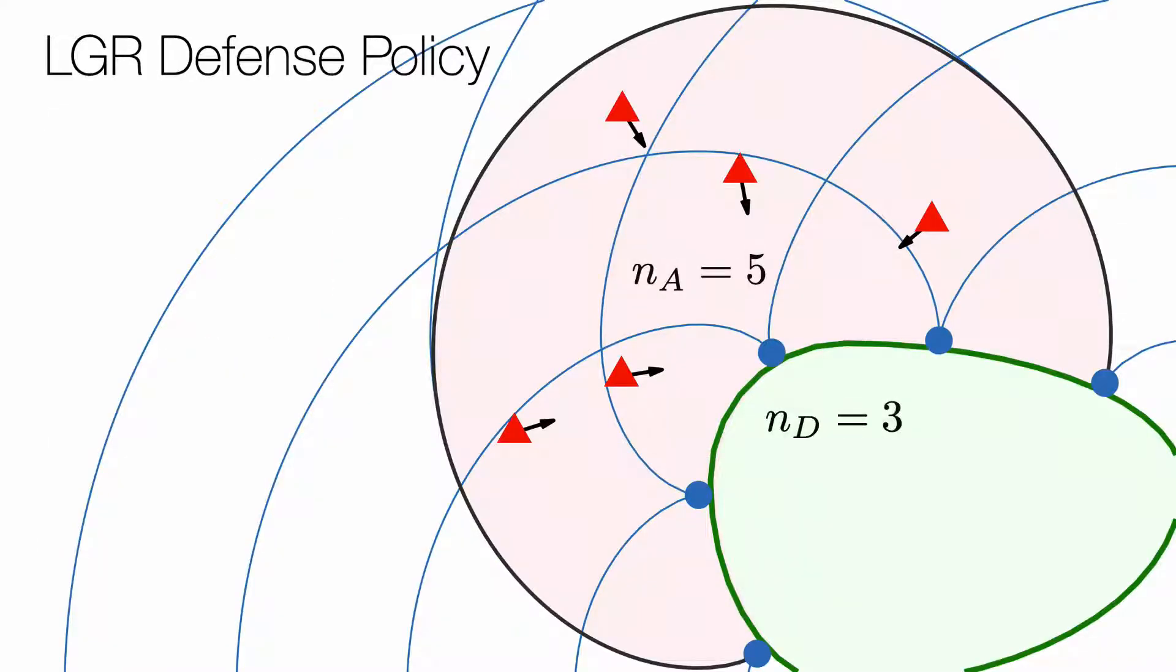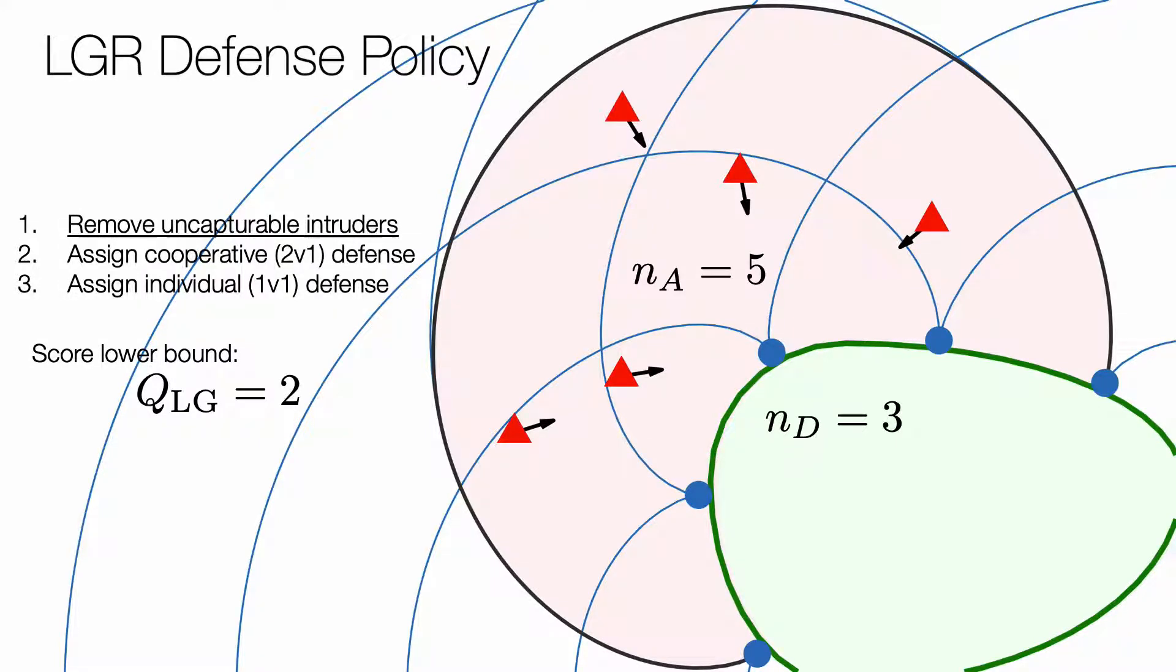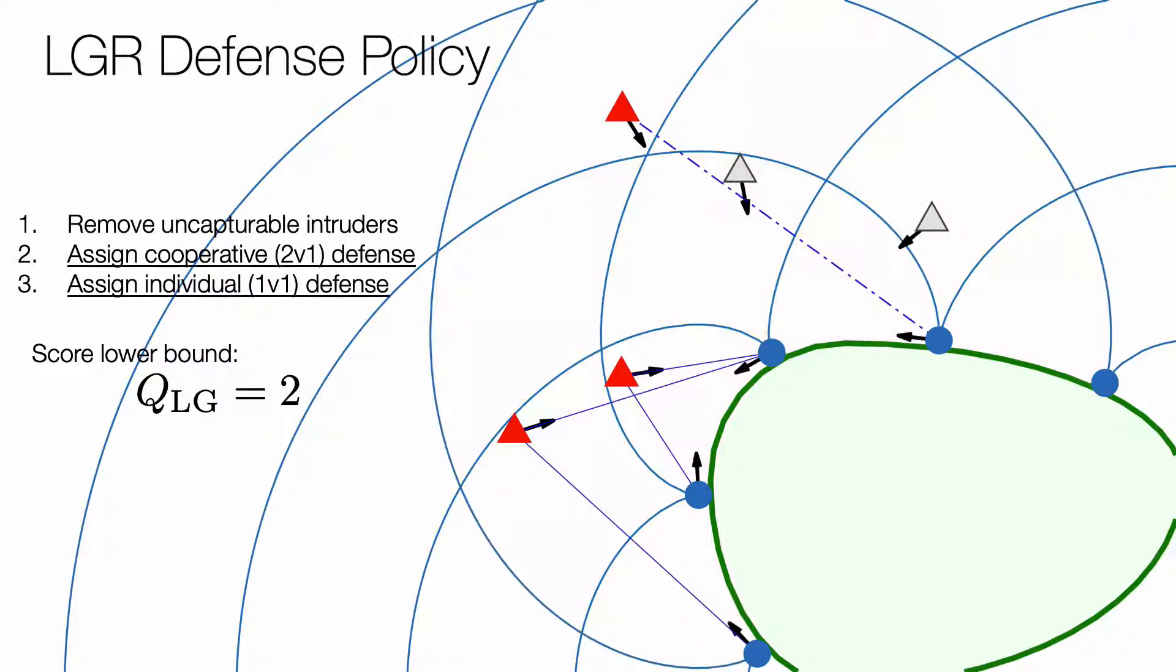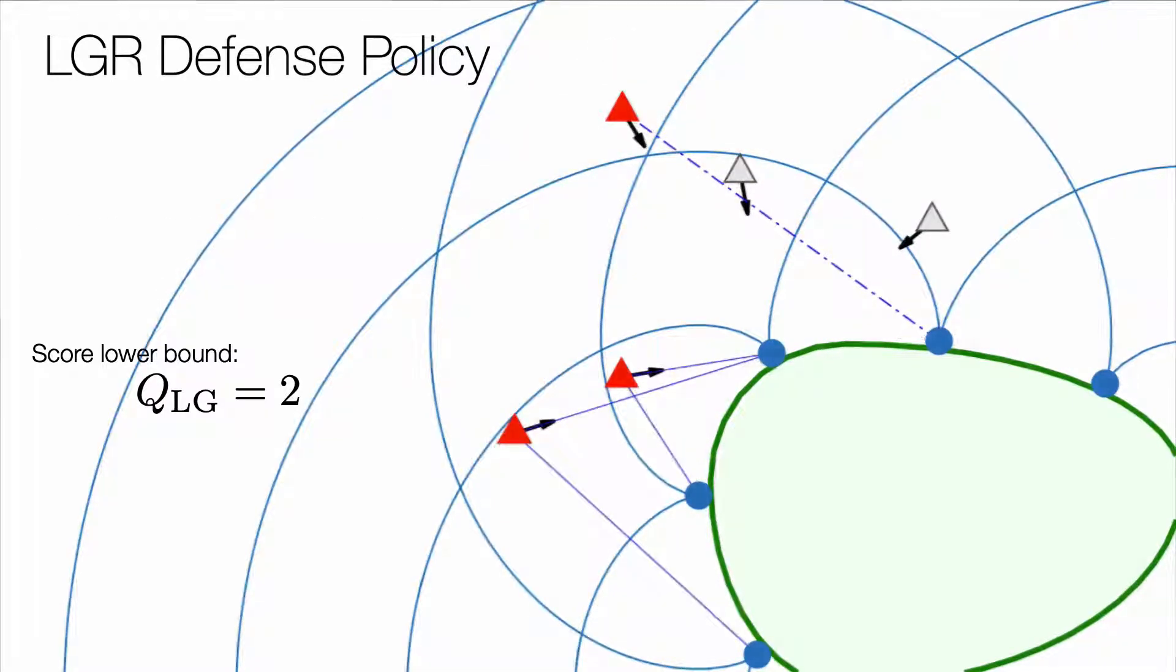The LGR defense policy also handles the case when QLG is positive. By intelligently selecting the intruders to ignore, the defenders make sure that all the rest are captured.